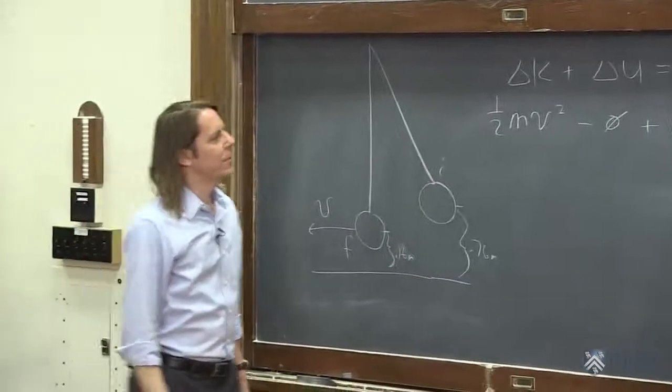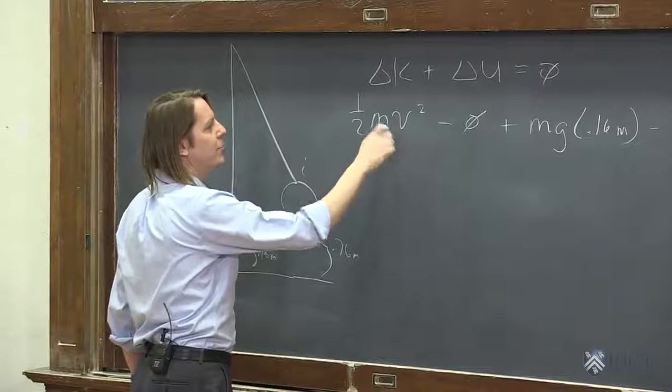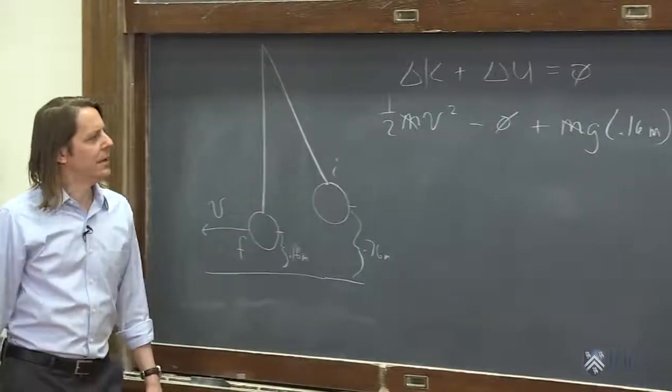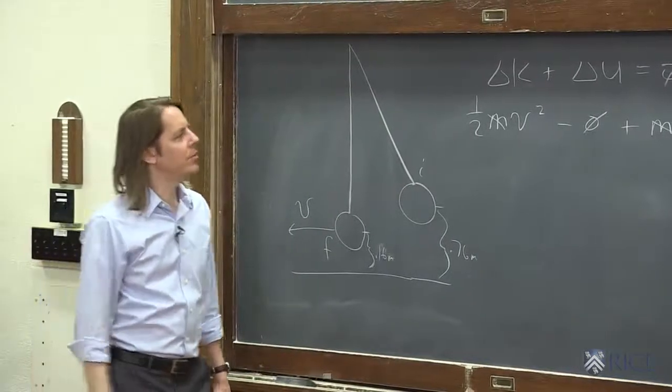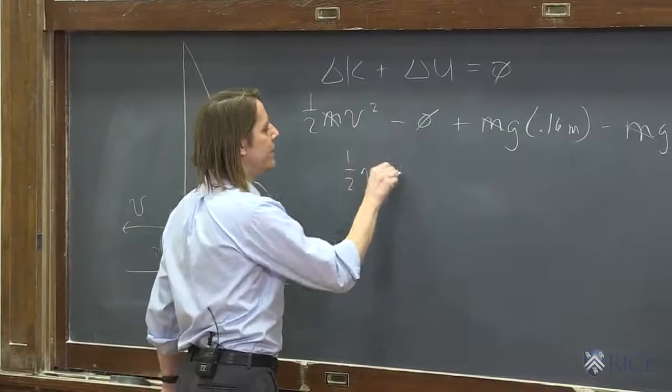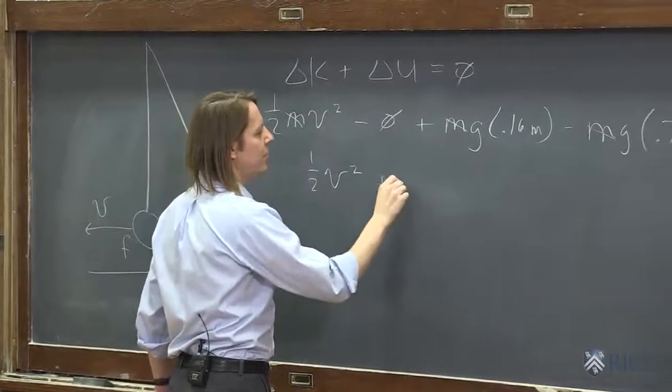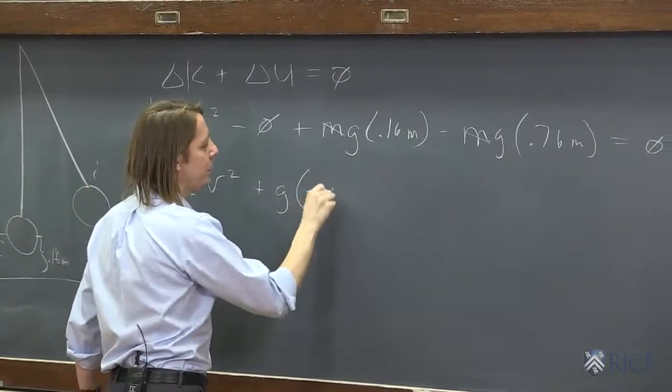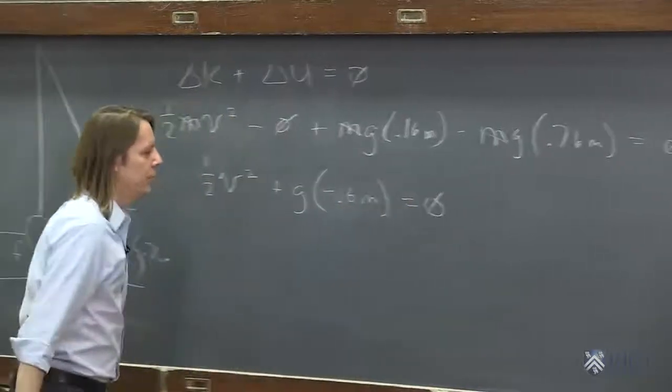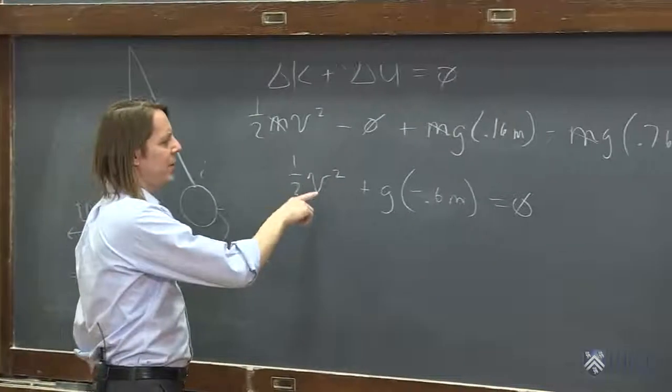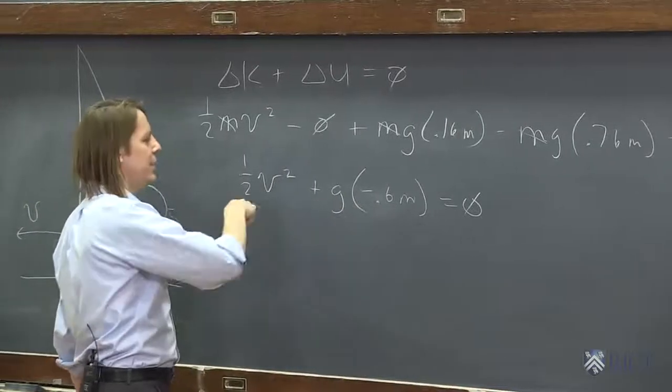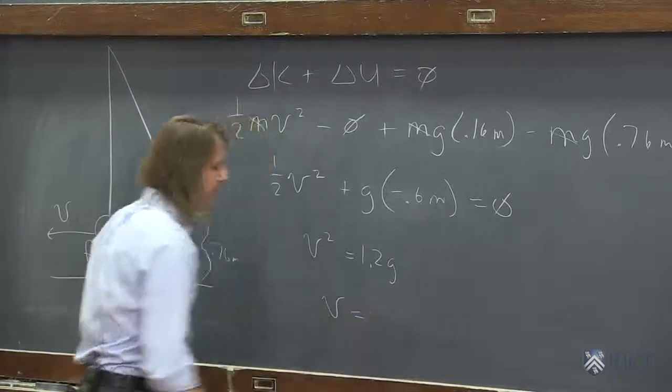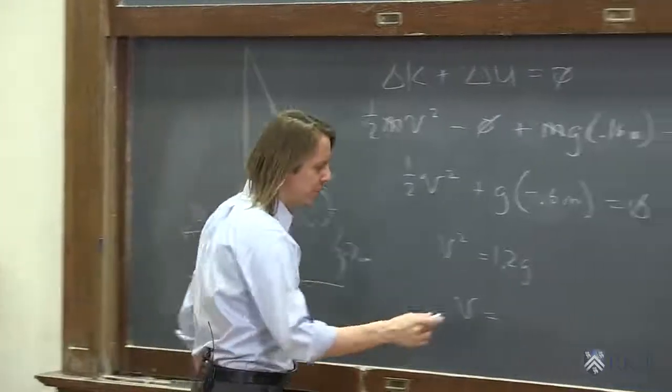And the only variable in here is v. That's what we're looking for. Each term has an m, and it's equal to 0. So we can basically cancel the m's. The m's go away. And we know g, so we can calculate v. We can rearrange a little bit: 1 half v squared plus, we can go ahead and pull the g out. And it's g times 0.16 minus 0.76 is minus 0.6 meters, equals zero. So then we could say 0.6 g on that side and bring in the 2, and v squared is 1.2 g. And if you finish it off, you get that the v should be about 3.4 meters per second.